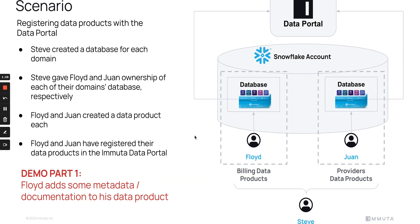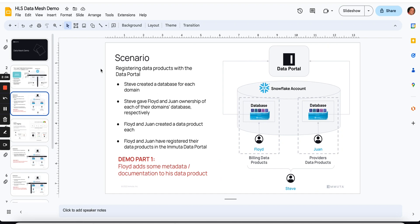So I'm going to talk about this initial scenario. I'm going to jump to a demo. This is the scenario we're going to walk through, where I have these two data owners and their own respective data products that come from their own database, which represents their domain. I'm going to show you how the Immuta data portal lets you manage the metadata about your data products, which will be important for how we build policies in a moment.